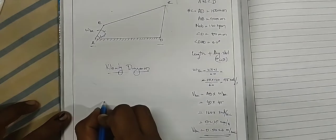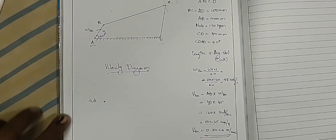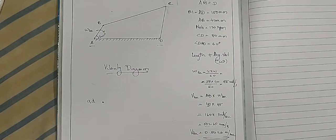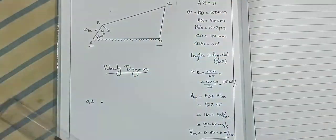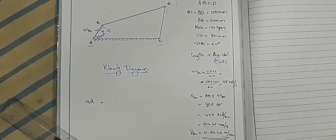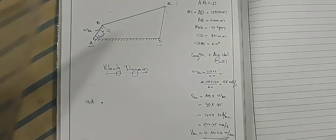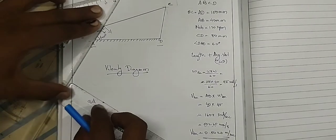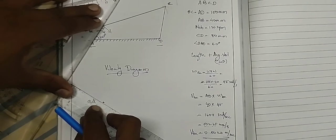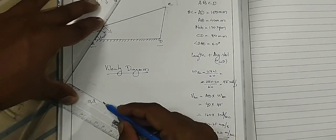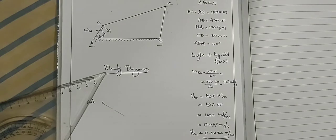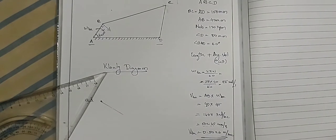So mark A and D here as the fixed points. At point B, the velocity will act in the omega direction — perpendicular to link AB — because omega is clockwise. I am going to draw a line perpendicular to AB passing through the fixed point A-D, and mark the velocity V_BA equal to 0.5 meters per second in that direction.